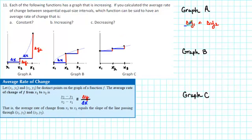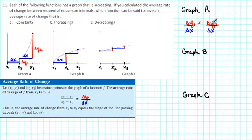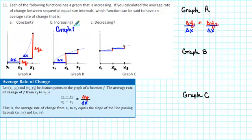Delta x1 and delta x2 are both exactly the same, so we can divide both sides by delta x. Since delta x is a positive number, the direction of the inequality stays exactly the same. What we see is that the average rate of change from x1 to x2 is less than the average rate of change from x2 to x3. Since the first average rate of change is less than the second, the average rate of change is increasing. So Graph A has an increasing rate of change, which corresponds to answer B.